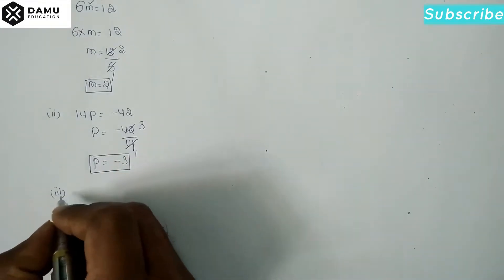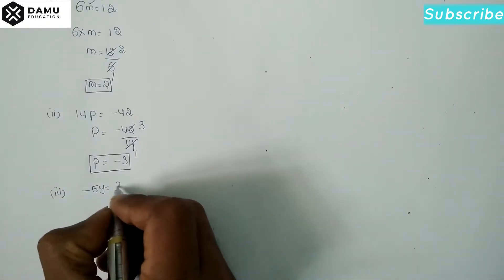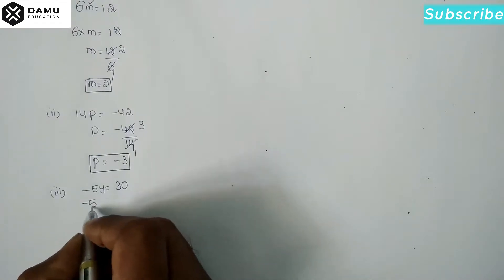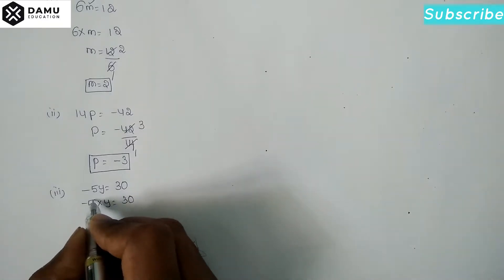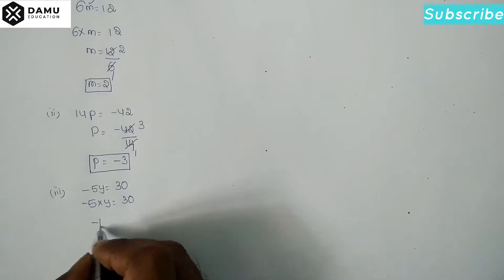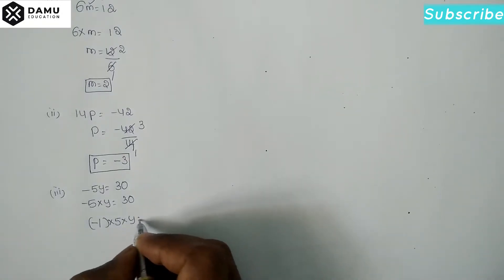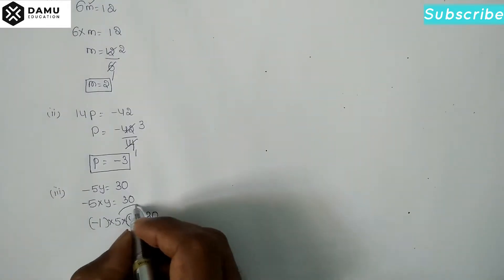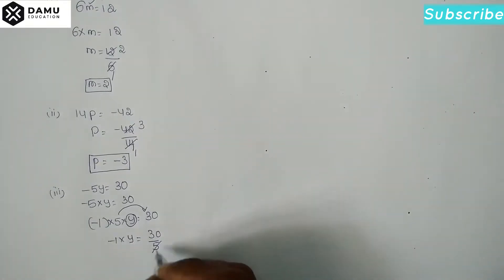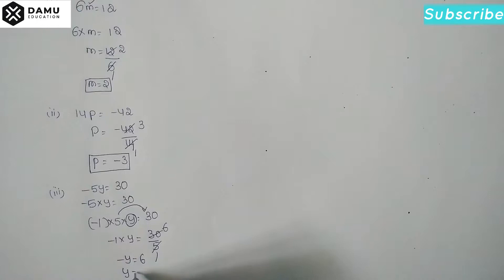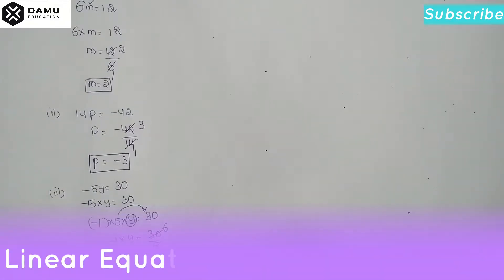The third one: -5y = 30. Here -5 is in multiplication with y. Shifting to the right side, we get -1 × 5 × y = 30, so -1 × y = 30/5 = 6, meaning -y = 6. Multiplying both sides by -1, minus times minus becomes plus, so y = -6.